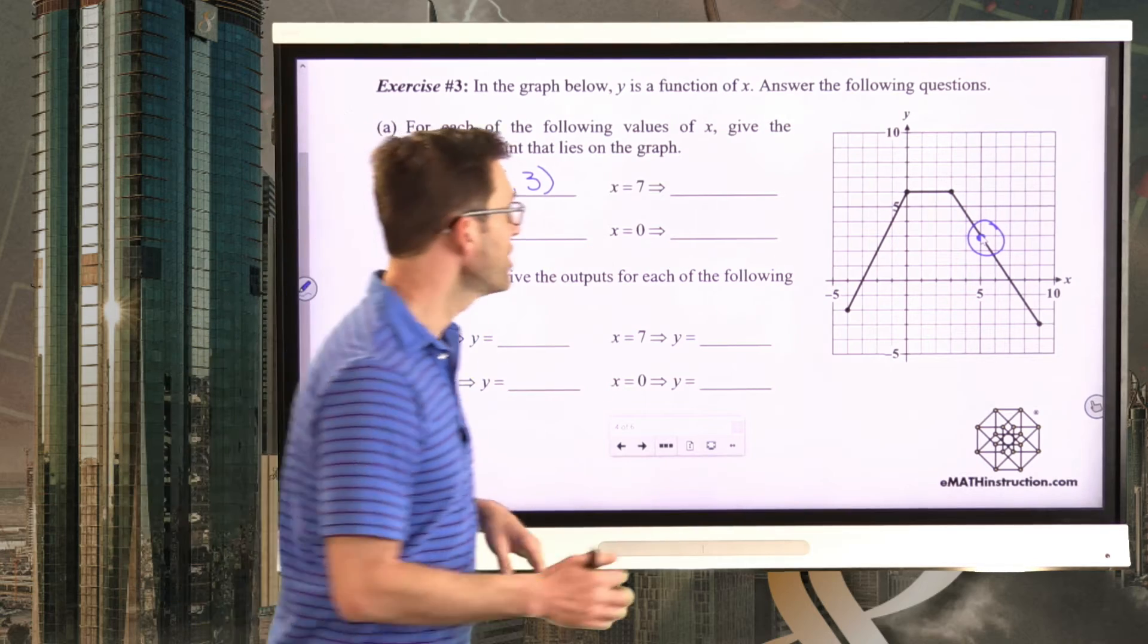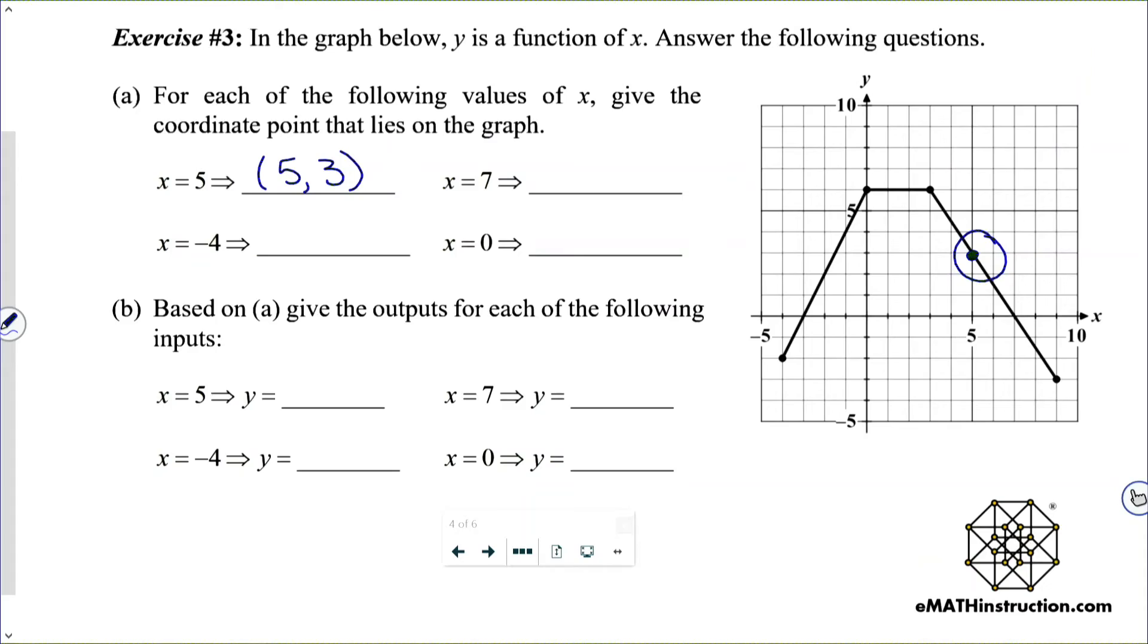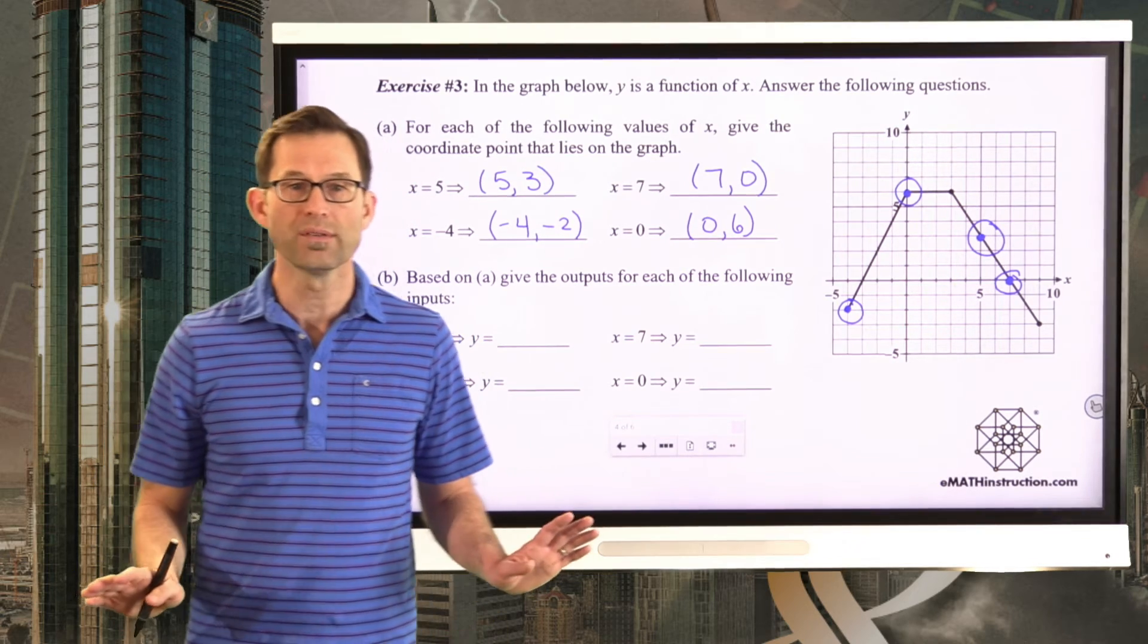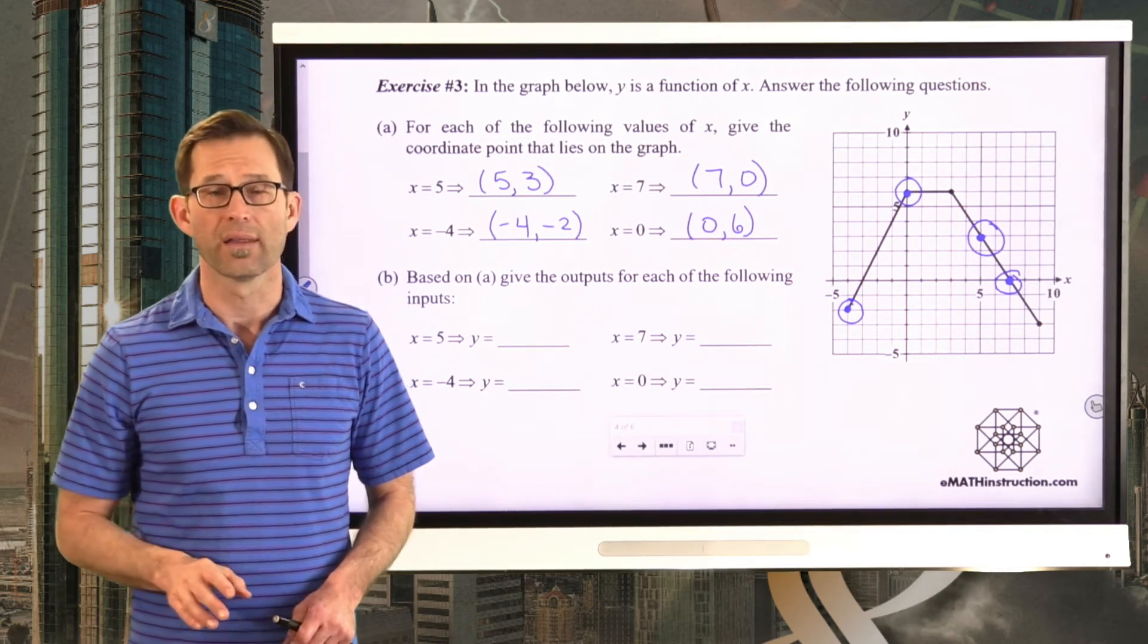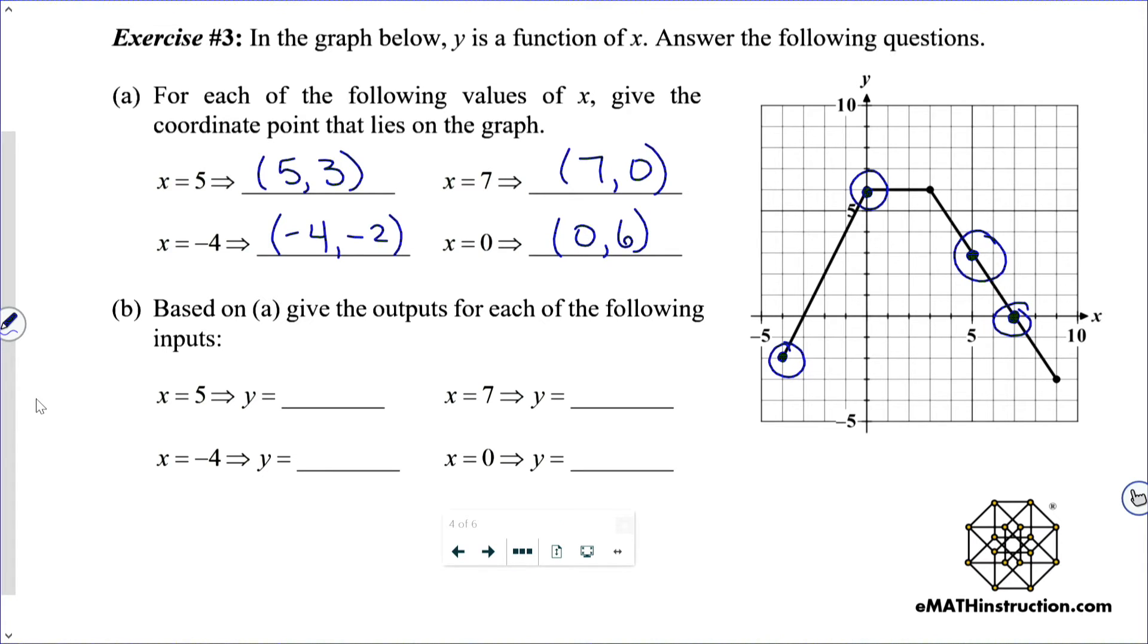All right, let's take a look. So x equals 7, simple enough. We've got 7 right here. It lies right on the x-axis, so that's the point 7 comma 0. For x equals negative 4, that's right here. That's actually the end point, the left end point of the function. So that's negative 4 comma negative 2. And finally, x equals 0. That's actually the y-intercept of the function right there, and that's going to be 0 comma 6. So hopefully you got all of those points. All right, now what do we do exactly? Well, let's take a look at letter b.